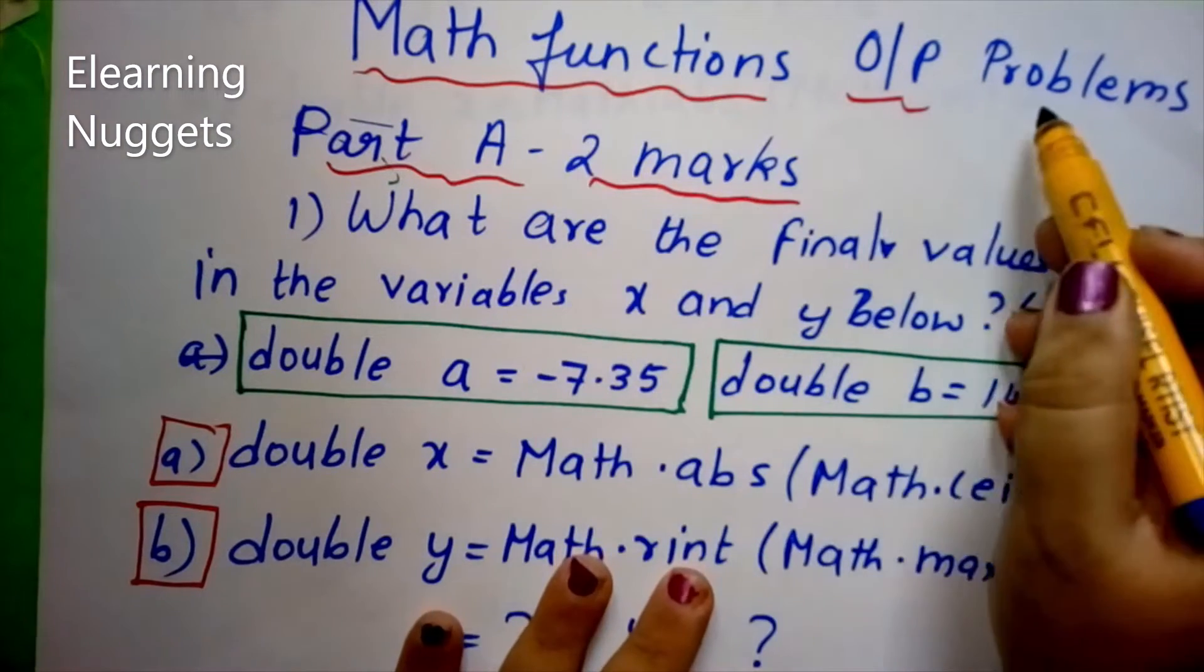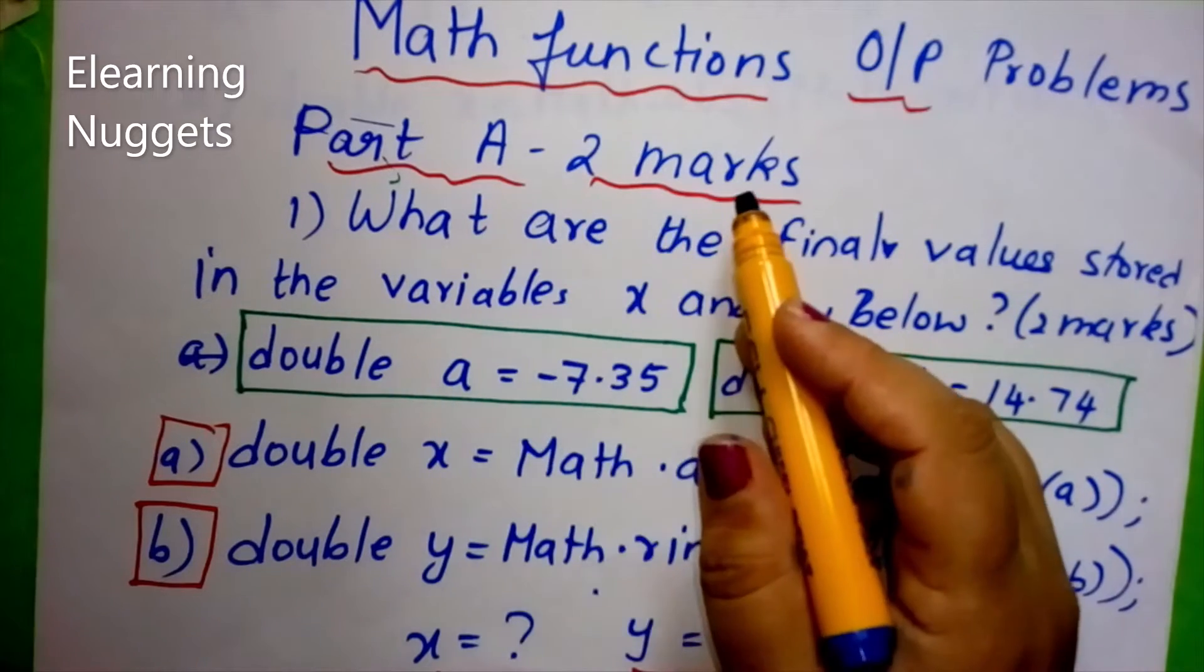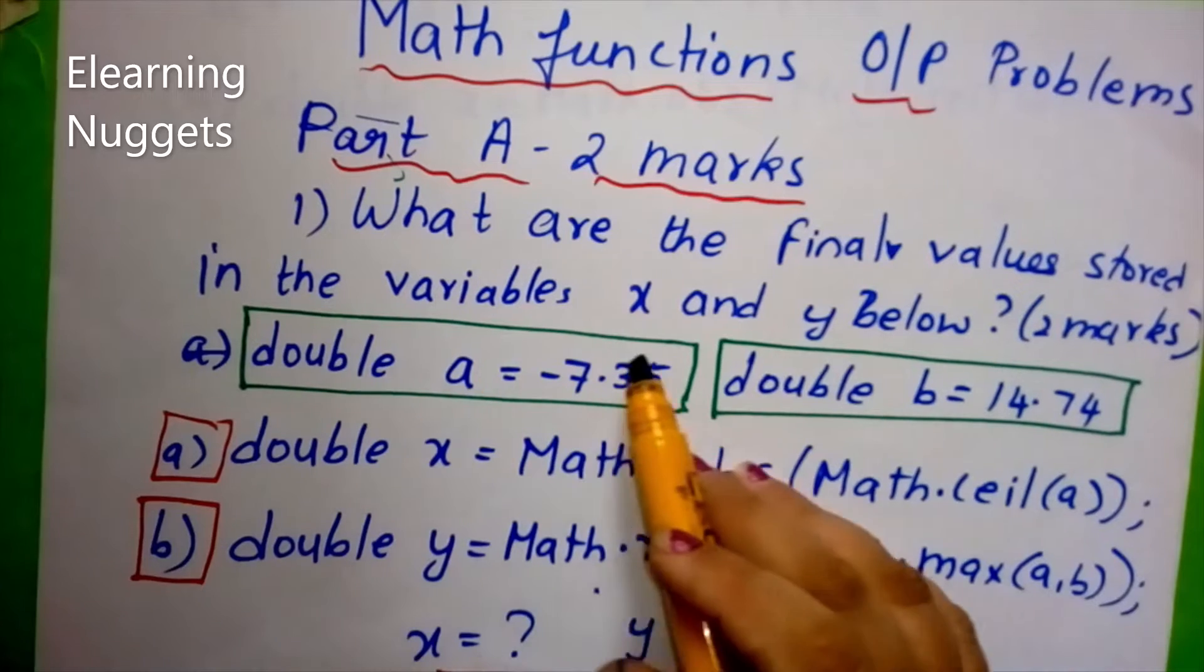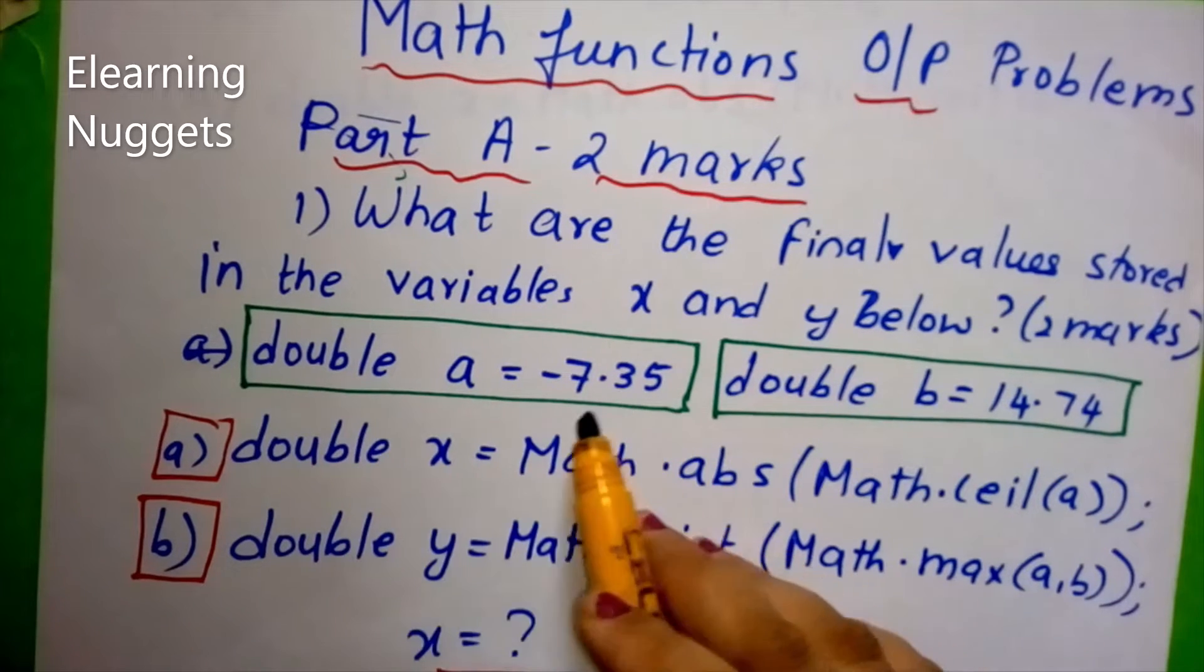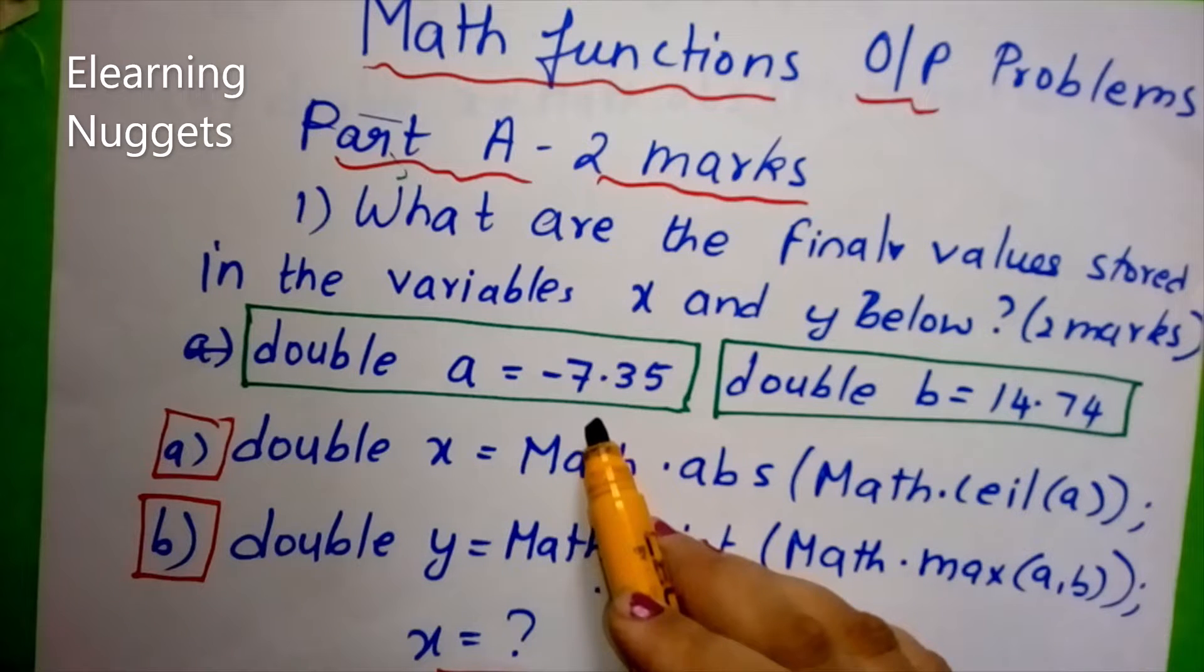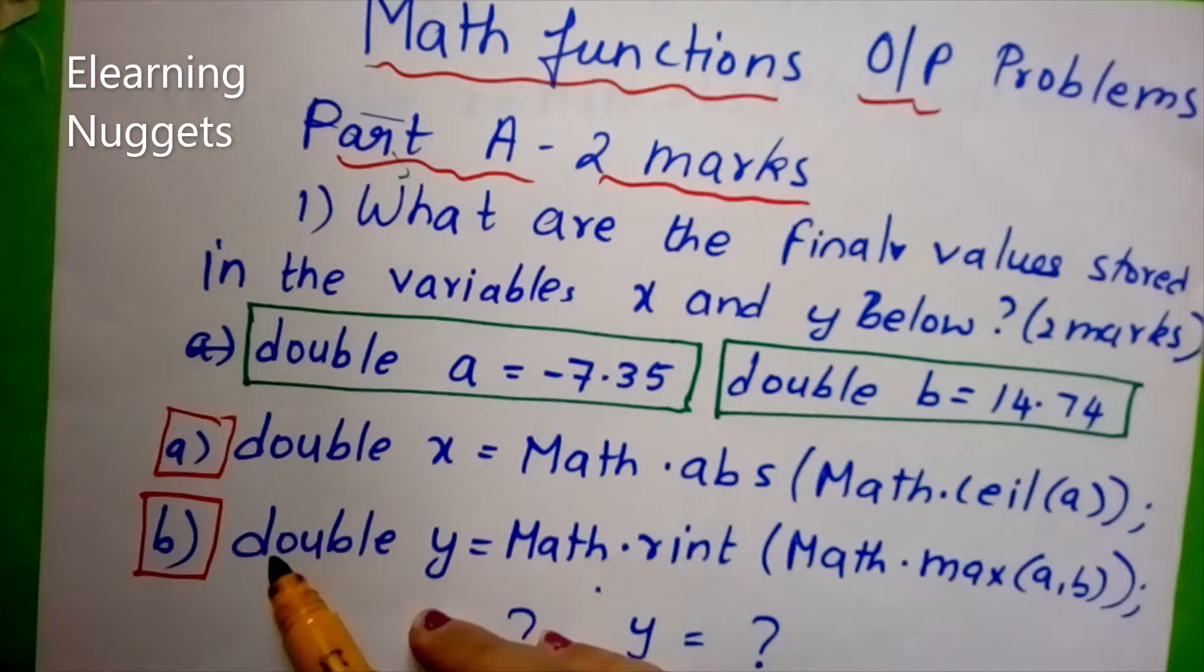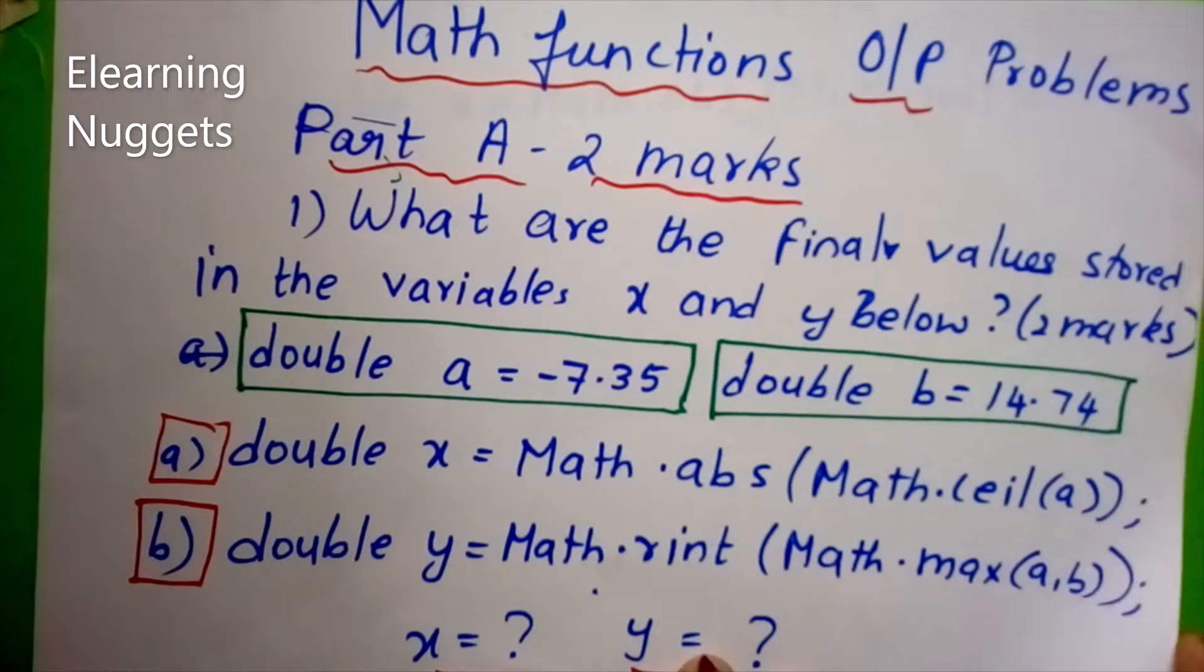We will see the math functions output problems which will be asked in the exam. It will be asked for part A for two marks. Questions will be like this: What are the final values stored in the variables X and Y below? They have given the values of A and B. A is given as minus 7.35 and B is given as 14.74. And two questions are asked. Each will carry one mark. Let us solve one by one each.